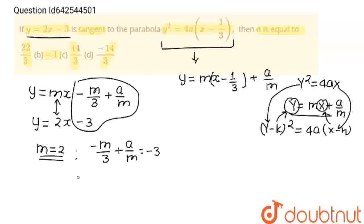Now, I am going to put m = 2. Here we'll get -2/3 + a/2 = -3. From here we can write a/2 = -3, and this -2/3 will come to RHS, becoming +2/3.